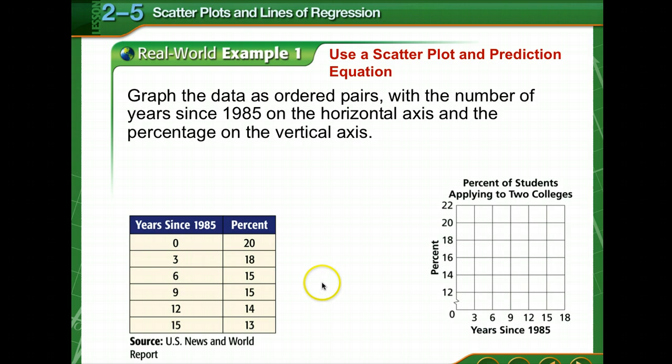So we're going to graph the data as ordered pairs. So there's 0,20, 3,18, 6,15, 9,15, 12,14, 15,13. So the number of years since 1985 on the horizontal axis and the percentage on the vertical axis. So again, time is across the x-axis. But these are years since 1985.